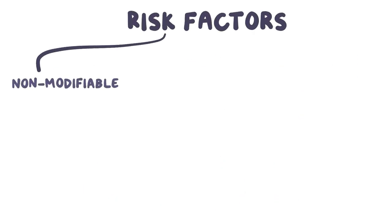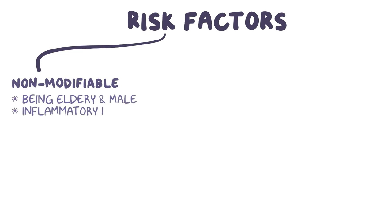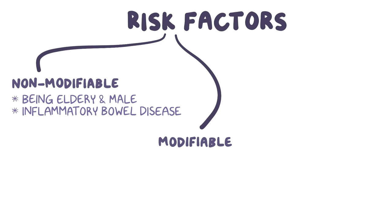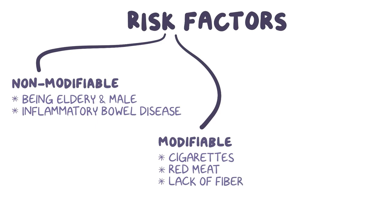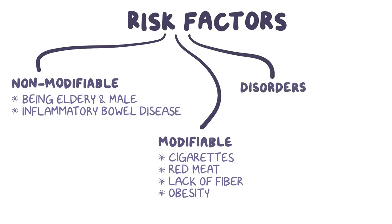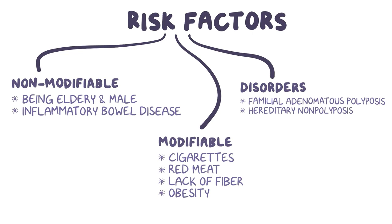There are some non-modifiable risk factors for colorectal cancer, like being an elderly male and having inflammatory bowel disease, but there are also some modifiable risk factors as well, like smoking cigarettes, eating a lot of red meat, not eating a lot of fiber, and being obese. Colorectal cancers are also associated with specific disorders like familial adenomatous polyposis, as well as hereditary non-polyposis colorectal cancer.